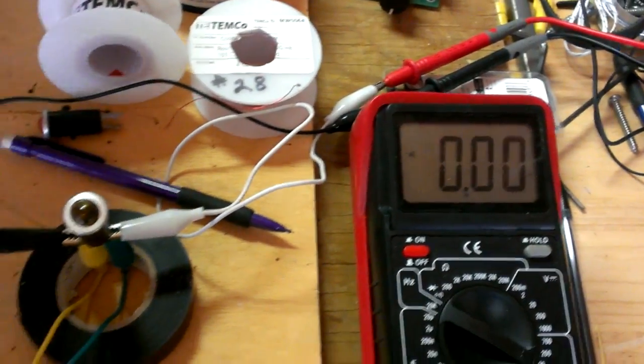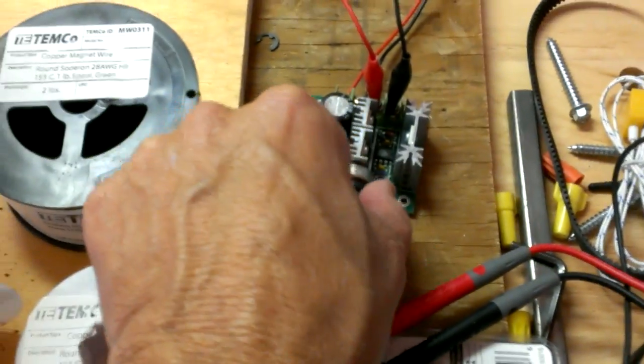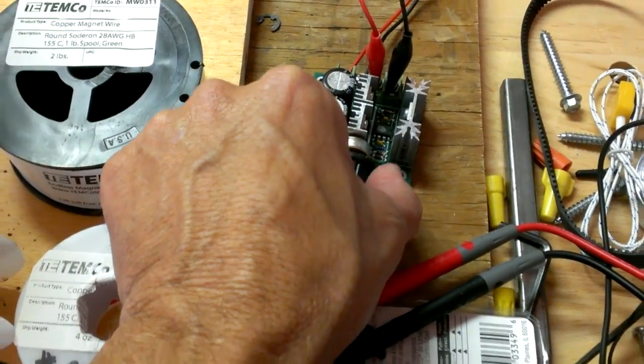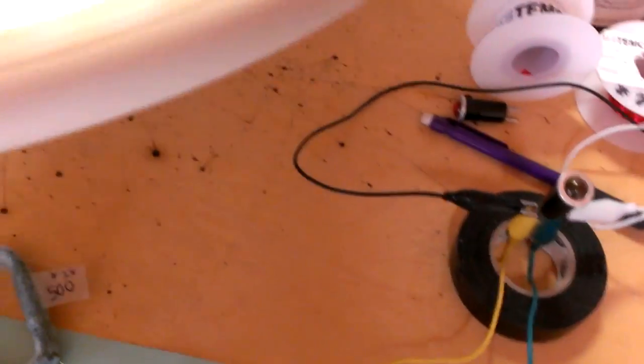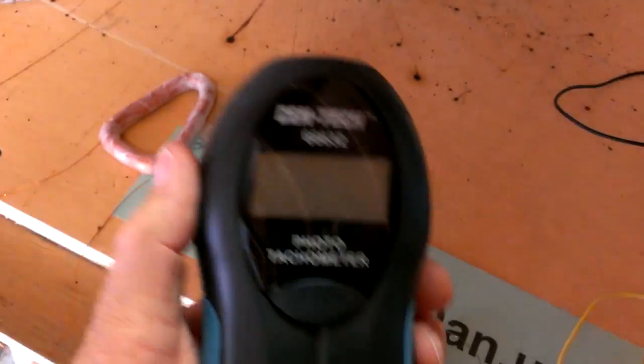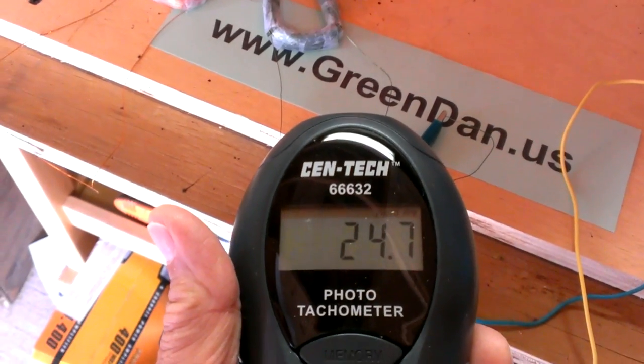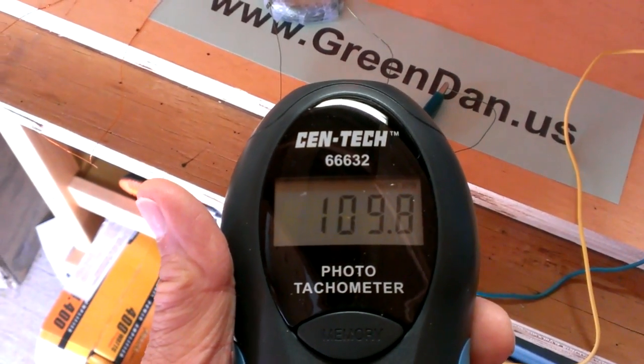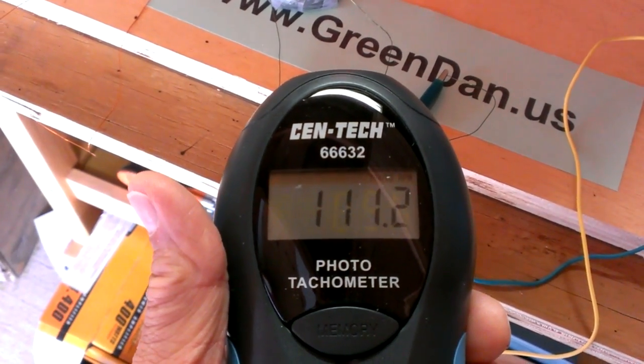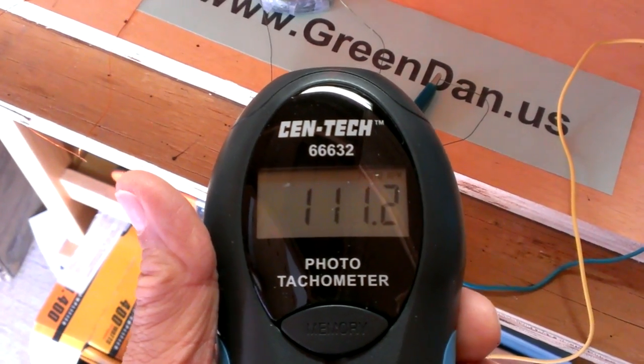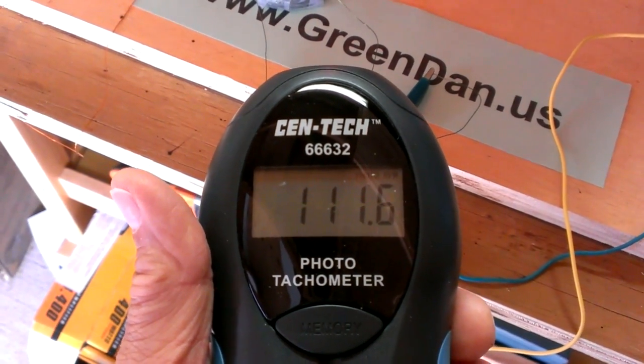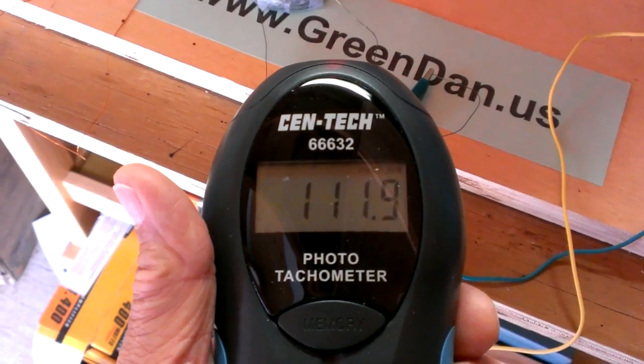Okay, I'm going to spin the rotor a little bit faster. Let's see what we got here. That's probably pretty accurate right there, about 111, 112 rpms.